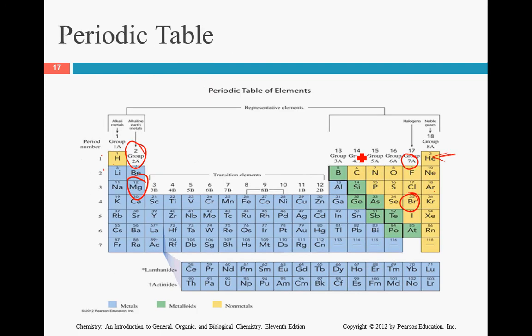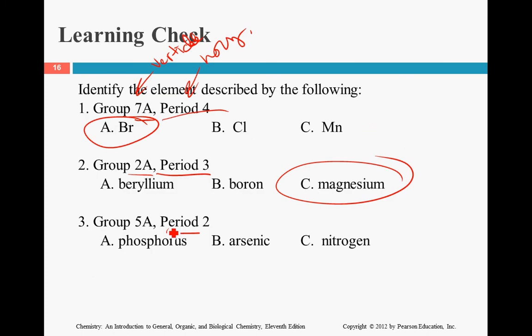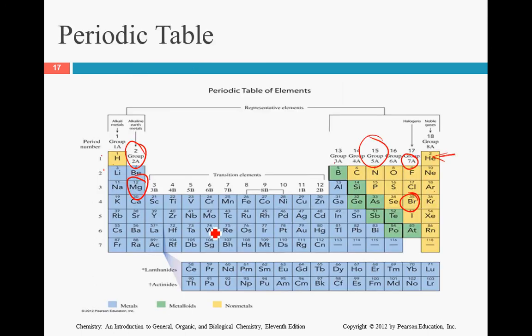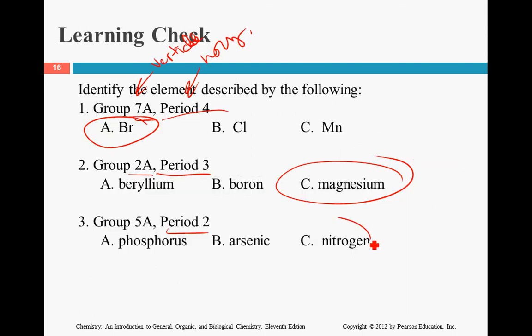Group 5A. 1, 2, 3, 4, 5. Period 2. 1, 2. So, we're going across 2. Here we go. Nitrogen. Kind of like reading a math.